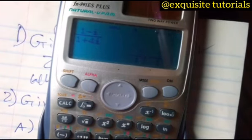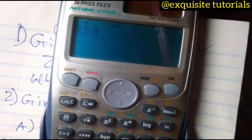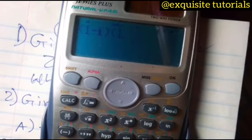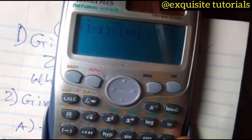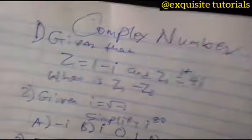Or let's say you are multiplying 1 minus i, then times 1 plus 4i. As easy as that, you can see it, 5 plus 3i.